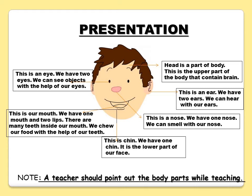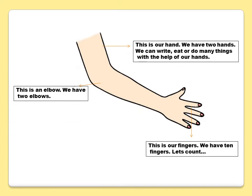Note: A teacher should point out the body parts while teaching. This is our hand — we have two hands and we can write, eat, or do many things with the help of our hands. These are our fingers — we have ten fingers. This is an elbow — we have two elbows.